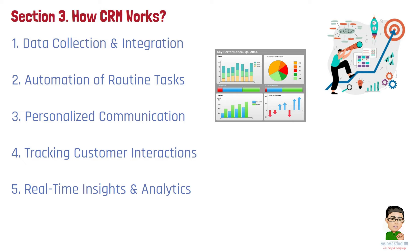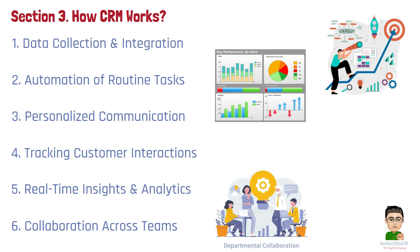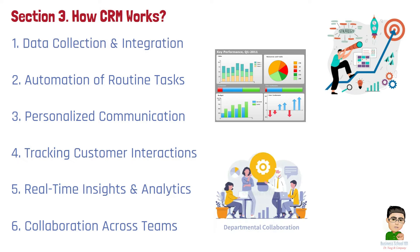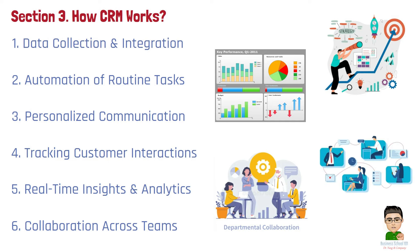Number 6: Collaboration Across Teams. Greentech's CRM enhances collaboration by giving all departments — sales, marketing, and customer service — access to the same customer data. The marketing team can pass customer behavior data to sales, while service updates inform the sales team to avoid pitching new products at inappropriate times, ensuring a smooth, coordinated customer experience.